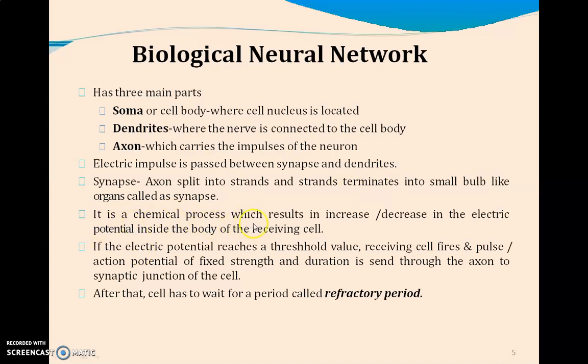It is a chemical process which results in increasing or decreasing electrical potential depending upon the weightage of the signal produced inside the receiving cell body. If the electric potential reaches its threshold value, the neuron will be fired and action will take place. That is sent to the axon. The axon carries the information to the synaptic junction. After that, the cell has to wait for the refractory period to get another signal. We want to replicate this in artificial neural networks.